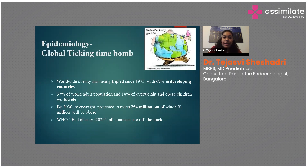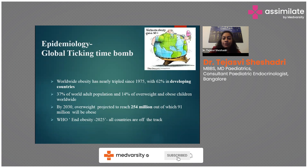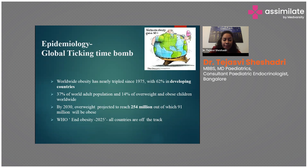Why is obesity so important right now? It has been noted that worldwide obesity has tripled, with 62 percent occurring in developing countries. Worldwide, 14 percent of children are overweight or obese, and it is projected that by 2030 this will reach 254 million, of which 91 million will be obese. The WHO end-obesity-by-2025 target appears completely off track.